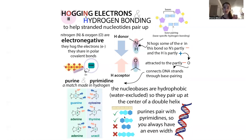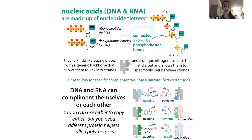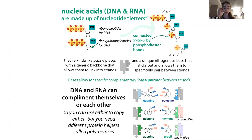You also have A base-pairing with U. In all these cases you have one purine and one pyrimidine, giving you a constant width of DNA. Remember: you always need one purine and one pyrimidine. Purines are adenine and guanine, so they don't pair with one another. You can remember that G and C bind each other because the letters G and C look similar, and that leaves A pairing with T, and A pairing with U.